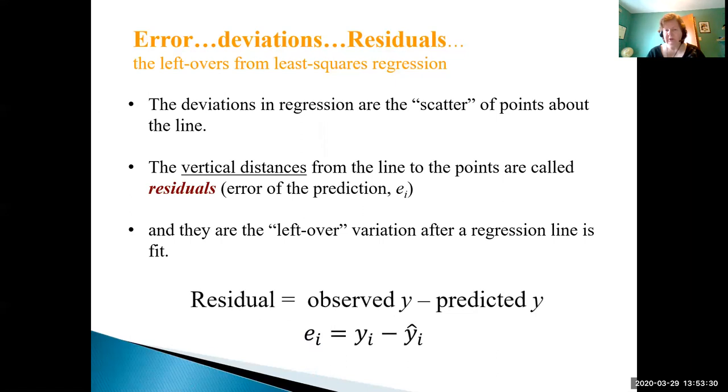Remember residuals are observed y's minus the predicted y's. In other words, ei is equal to yi minus y hat i. And the i is just referred to the subscript the one, two, however many observations we have.